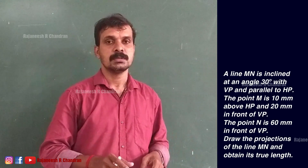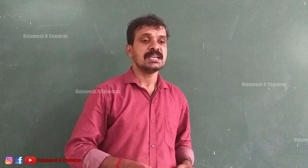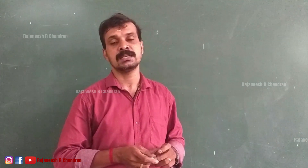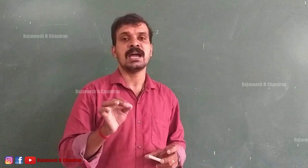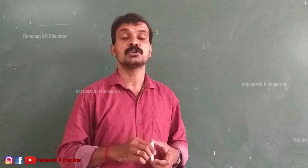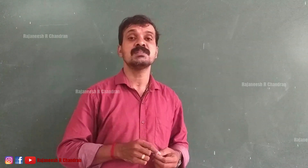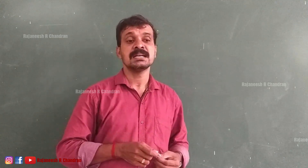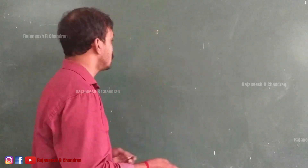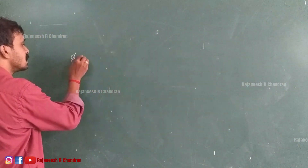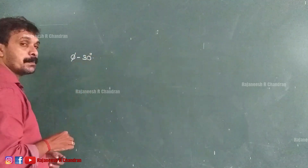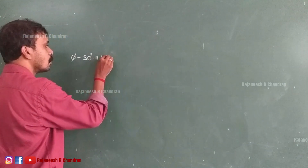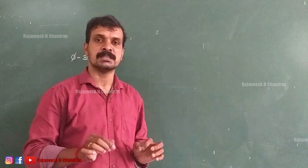The problem states a line MN is inclined at 30 degrees with VP. So what is the 30 degrees? It is a true inclination of the line with VP. If it was a true inclination with HP, it would be represented with theta. Here it is a true inclination with VP, so it is represented with phi. So phi equals 30 degrees. The line MN has phi equal to 30 degrees and is also parallel with HP — inclined with VP and parallel with HP.